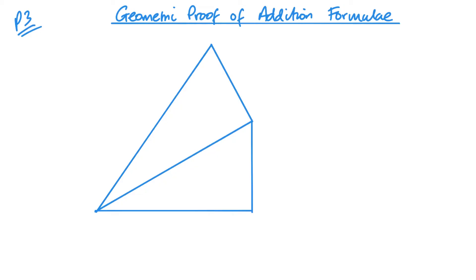To be able to prove the addition formulae using a geometric proof, we first need two right-angled triangles, and we're going to call these angles alpha and beta. They'll stand for our A and B in the final formulae, but since I'm going to start by labelling my triangles like A, B, and C, I don't want to confuse things by having a similar letter inside.